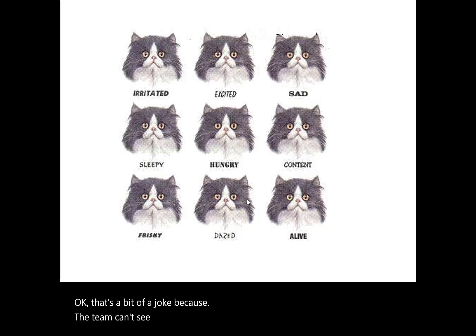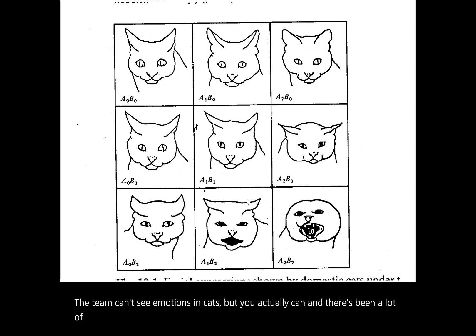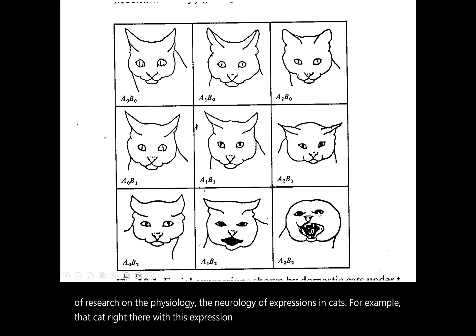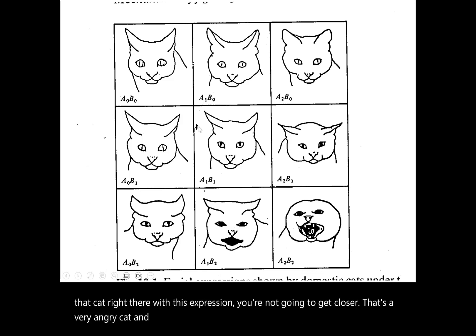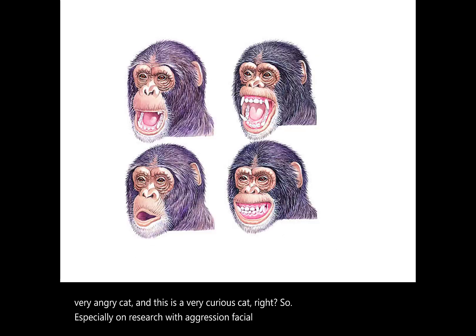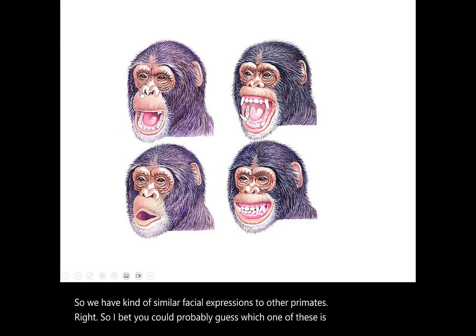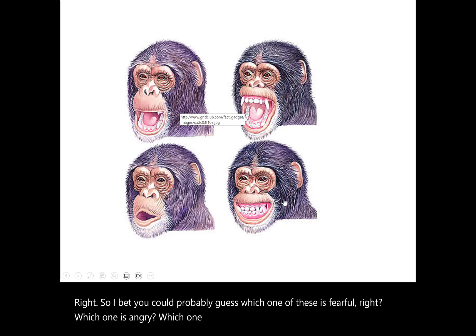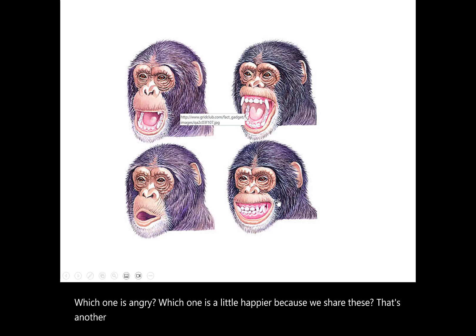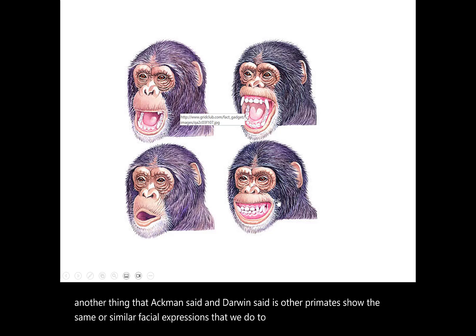Research on the physiology and neurology of facial expressions has been done with cats — an angry cat displays a very recognizable expression, as does a curious cat. Research on aggression in particular has used facial expressions in cats. We also share similar facial expressions with other primates. Ekman and Darwin both noted that other primates show the same or similar facial expressions as humans to communicate emotions — that's the universality of emotions.